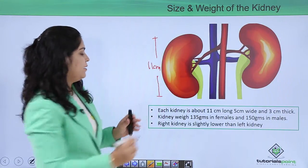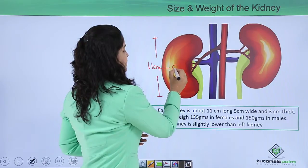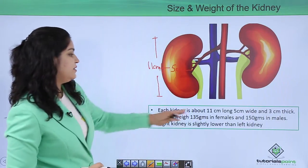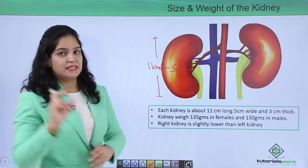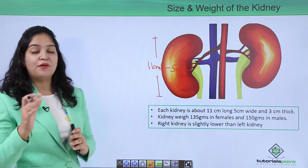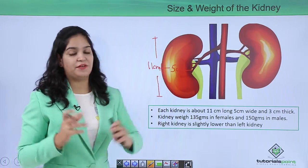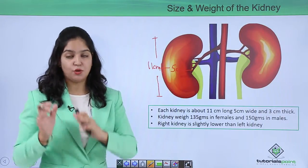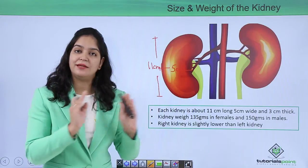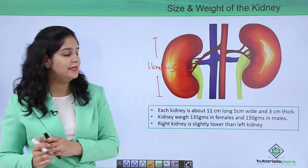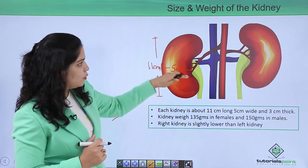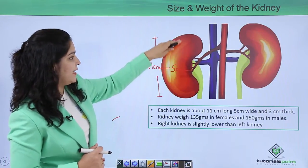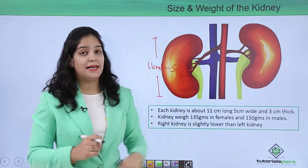Now, the size and weight of the kidneys: each kidney is 11 centimeters in length, 5 centimeters wide, and 3 centimeters in thickness. They weigh between 135 grams in females and 150 grams in males, so the weight is between 135 to 150 grams. The right kidney is slightly lower than the left kidney.